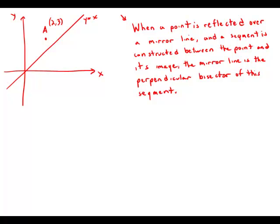So now we're ready to look at the question. In a rectangular coordinate system, the line y equals x is the perpendicular bisector of segment AB.